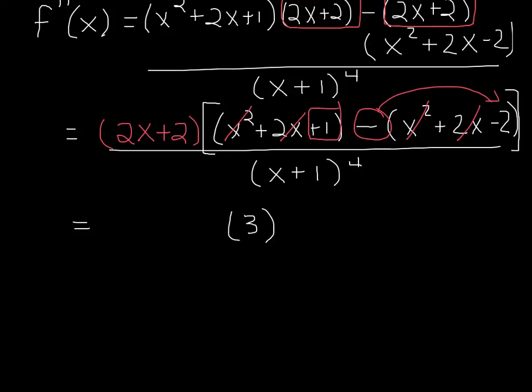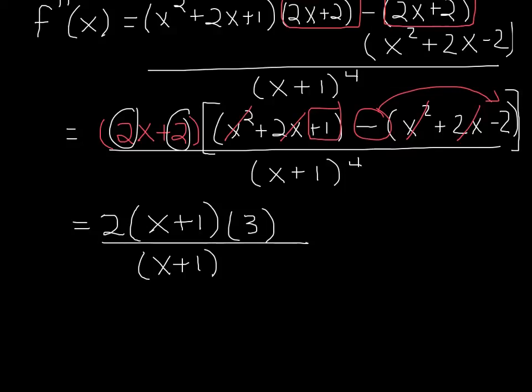Now back to that 2x plus 2 in front, if you'll notice there's a common factor of 2. And I'm going to take that 2 out front of here, and that leaves me with x plus 1. So that numerator just got a lot better. And this is all over x plus 1 to the 4th. So at this point you can notice there's a common factor of x plus 1, and we're going to divide the 1 in the numerator out with the 4 in the denominator, leaving 3 of them.